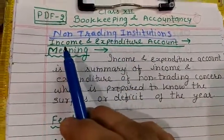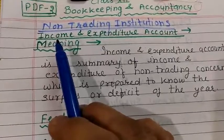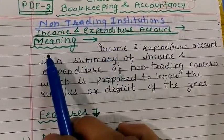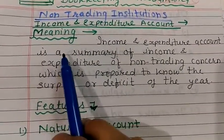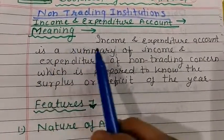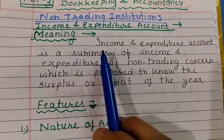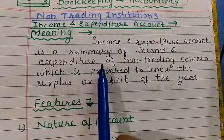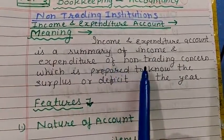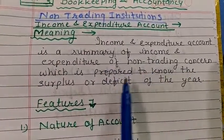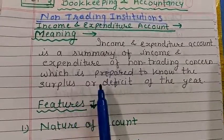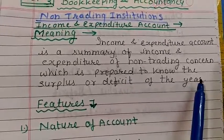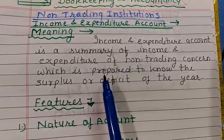In this we are going to study the Income and Expenditure Account. The Income and Expenditure Account is a summary of income and expenditure of a non-trading concern, which is prepared to know the surplus or deficit of the year of a non-trading institution.